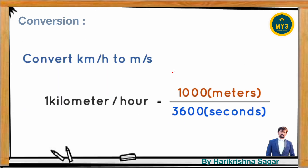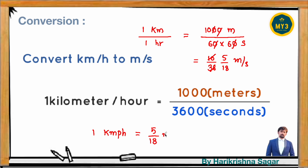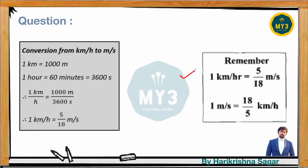Let's look at how to convert. 1 kilometer per hour = 1000 meters divided by 3600 seconds = 5/18 meters per second. So: 1 km/hr = 5/18 m/s. Conversely, 1 meter per second = 18/5 kilometers per hour. You must keep these conversions in mind while solving questions.